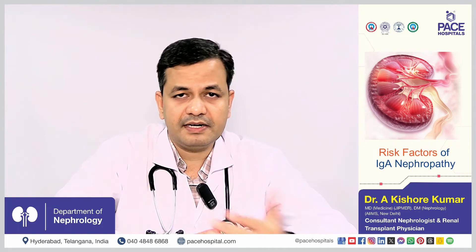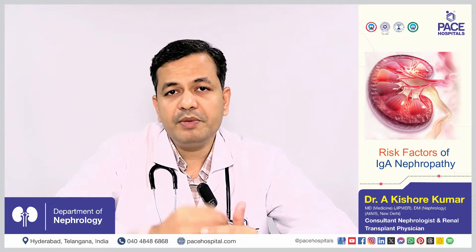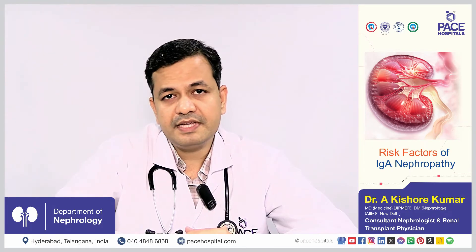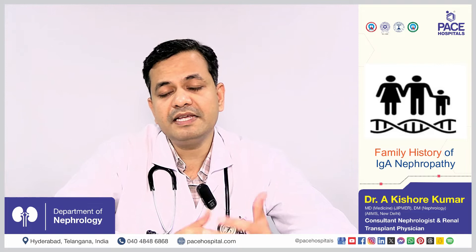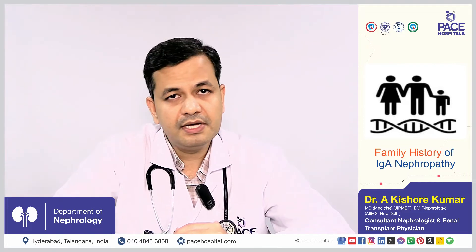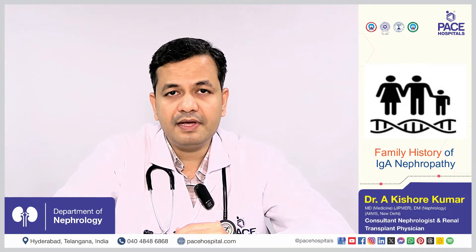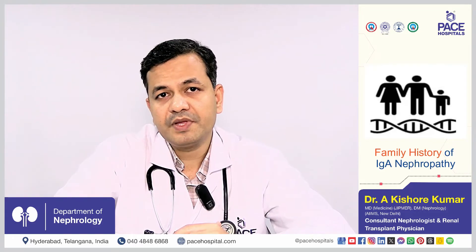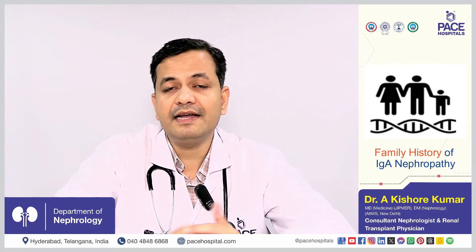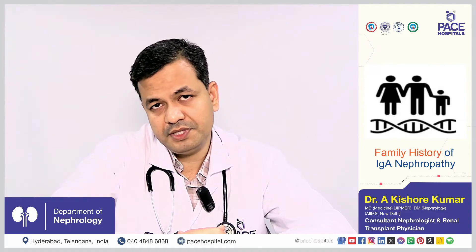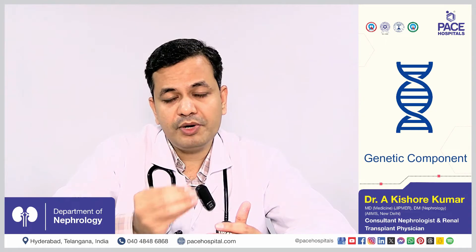There are a few risk factors, meaning some people are at increased risk of IgA nephropathy. The first one is family history — those who have patients of IgA nephropathy in their family are at increased risk, which means there is a genetic component for this disease.